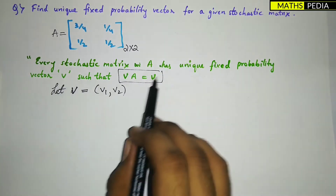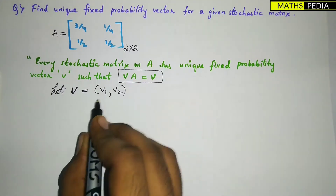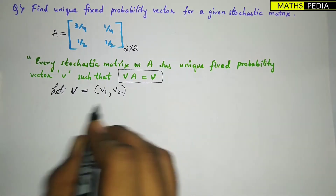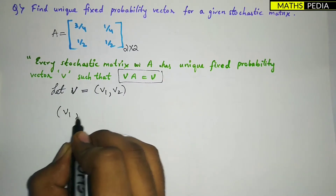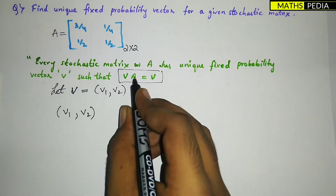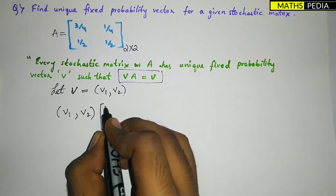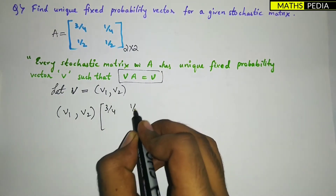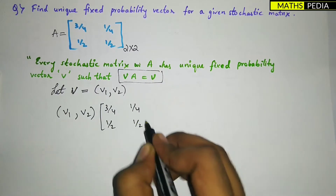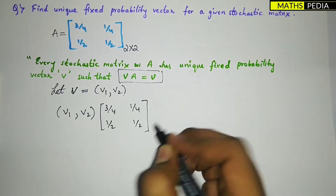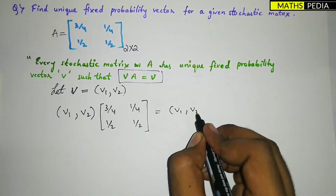Whenever you get the unique fixed probability vector, remember you have to substitute V. So in place of V you place (V1, V2), and the matrix is [3/4, 1/4; 1/2, 1/2], set equal to (V1, V2) again.